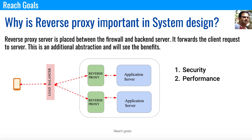The reverse proxy server can also be used to improve the performance of the application. For example, if you have JavaScript or HTML, instead of having that in the app server, you can serve it from the reverse proxy server — the load balancer doesn't need to reach the app server for static content. Additionally, the reverse proxy server can also function as a cache server, so cached information can be retrieved directly from the reverse proxy, improving speed and reducing latency.